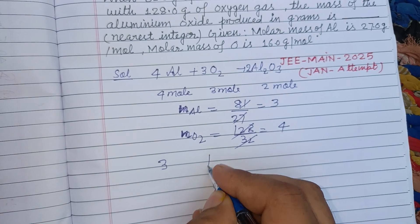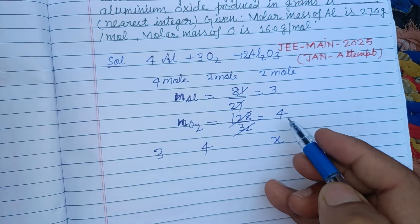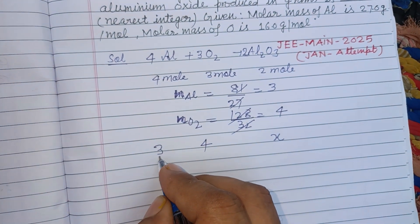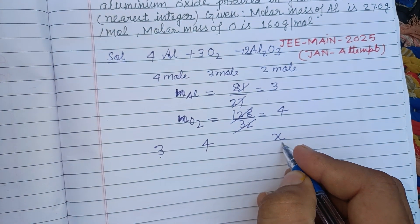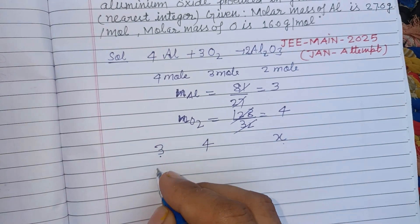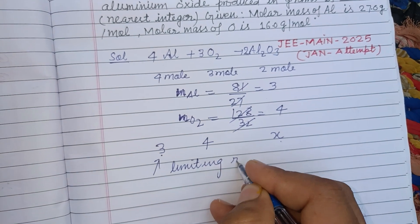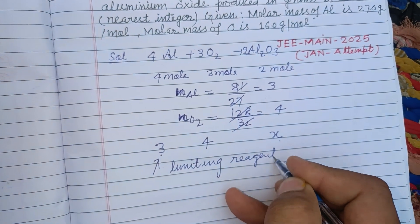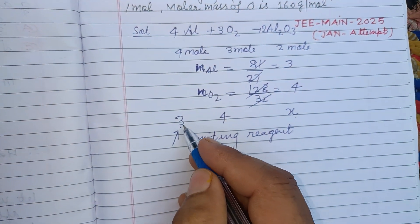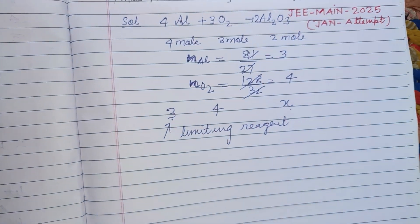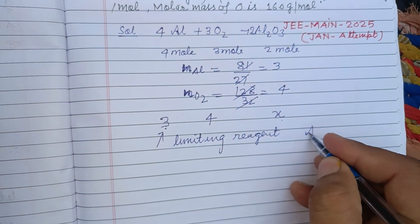We have 3 moles of Al and 4 moles of O₂. Let X be the moles of Al₂O₃ produced. Aluminium acts as the limiting reagent because its amount is less than that of oxygen — it is consumed first, before the oxygen is used up.